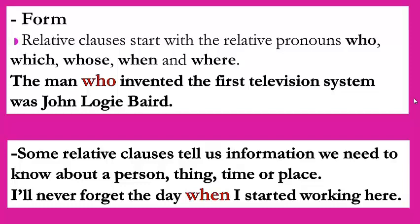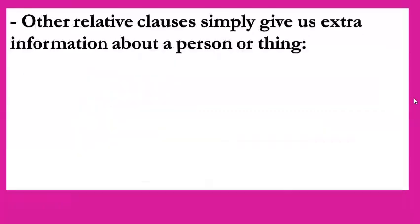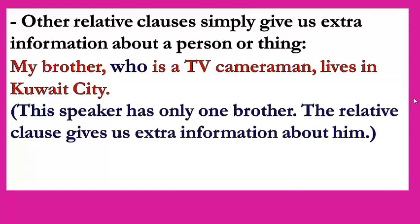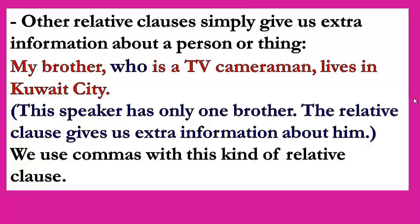Example: the man who invented the first television system was John Logie Baird. In fact, some relative clauses tell us information we need, and some tell us extra information that we don't need. Example: I'll never forget the day when I started working here. Other relative clauses give us extra information about a person. Example: my brother, who is a TV cameraman, lives in Kuwait City. We use commas with this kind of relative clause.